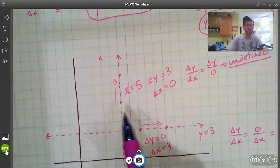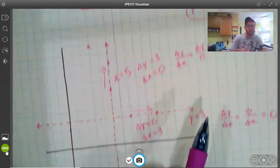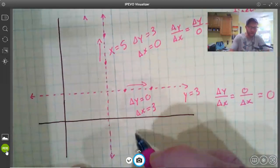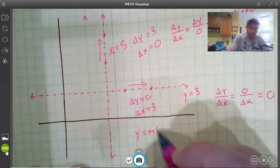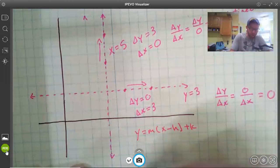So if I wanted to write an equation of this, say, in point-slope form, I can't do it because I can't plug in an undefined slope into that point-slope form equation. I can always plug in a 0, so I could write the equation of this line. It would be y equals m(x minus h) plus k.